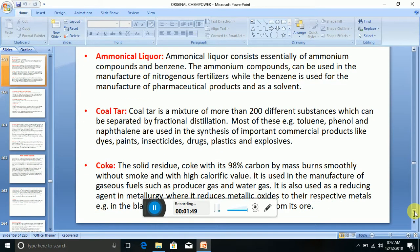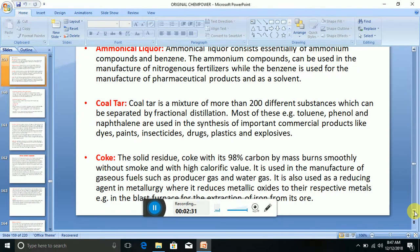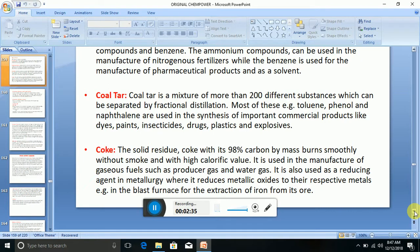Coke, the solid residue. Coke is another type of coal. It is the solid residue with 98% carbon by mass. Burns smoothly without smoke and with high calorific value. It is used in the manufacture of gaseous fuels such as producer gas and water gas. It is also used as a reducing agent in metallurgy where it reduces metallic oxide to their respective metals, for example in the blast furnace for the extraction of iron from its ore.